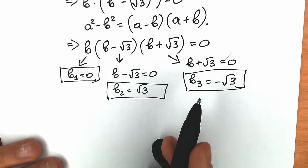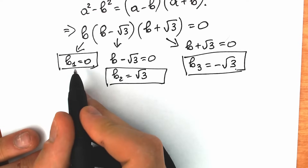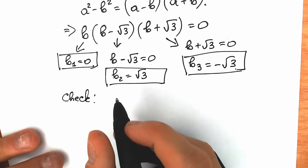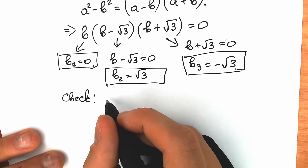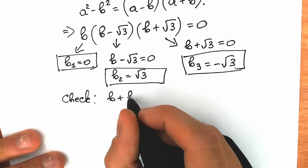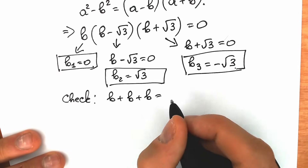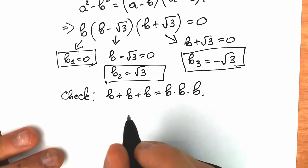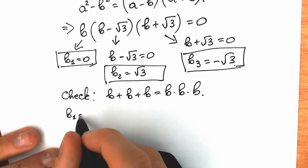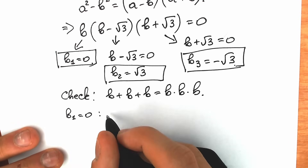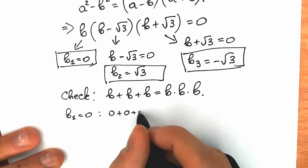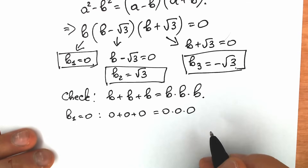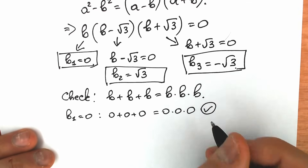We have b₁, b₂, and b₃. We don't need to check b₁ but let's verify anyway. We had b plus b plus b equal to b times b times b. When b₁ equals zero: zero plus zero plus zero equals zero times zero times zero. This is absolutely correct.